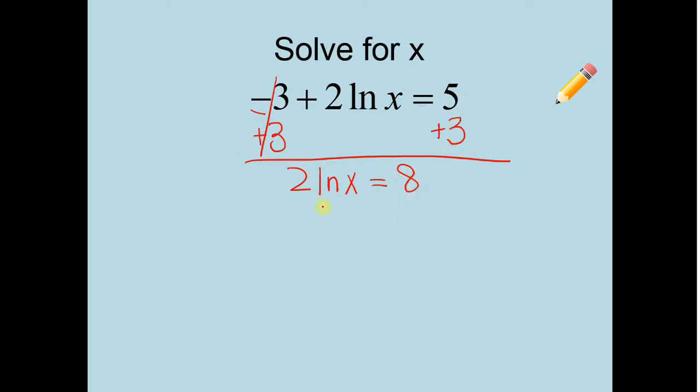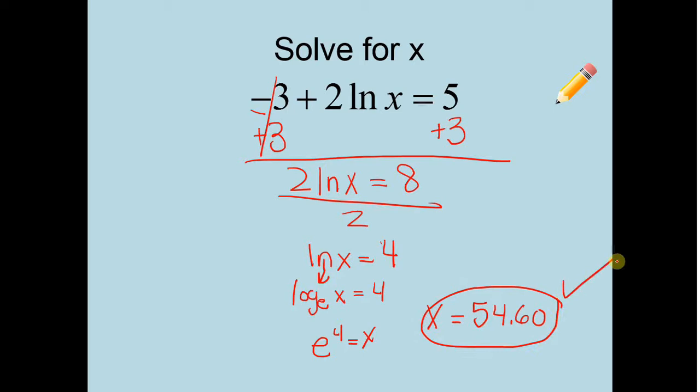And we're going to be left with 2 times the natural log of x equals 5 plus 3, 8. Now, can't convert to exponential form yet. I still have this 2. So let's divide by 2 on both sides. We get 4 because 8 divided by 2 is 4. Now, got to convert to exponential form. So this is technically log base e of x equals 4, right? Because remember, ln is just log base e. So you got e to the 4th equals x. So x has to be e to the 4th, which is 54.6. And this checks out perfectly as well.